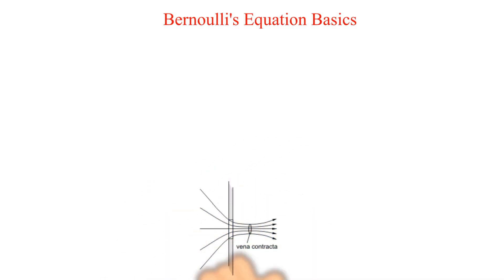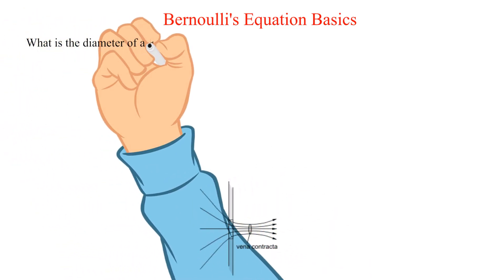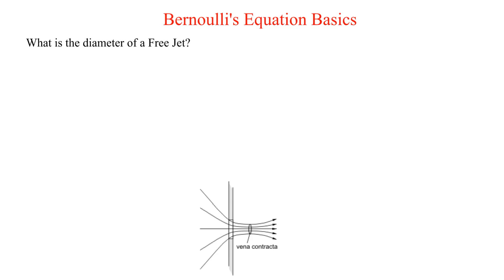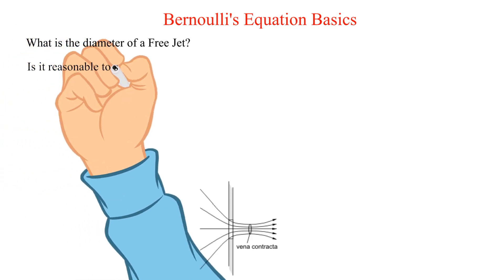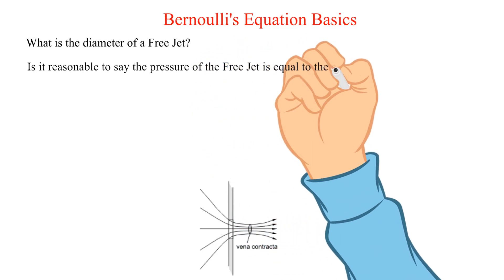We still have a few questions about the free jet. What is the diameter of a free jet? Is it reasonable to assume it is the same diameter as the tank outlet? Is it reasonable to say the pressure of the free jet is equal to the surrounding pressure?